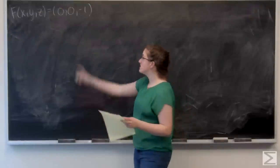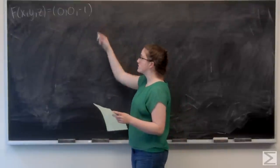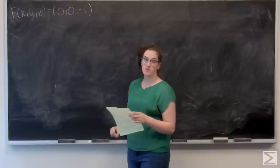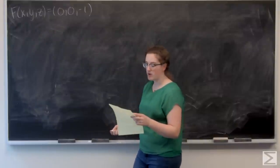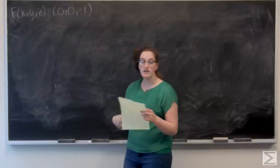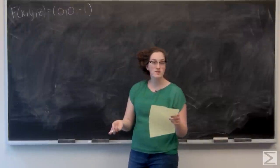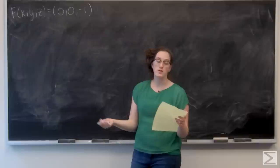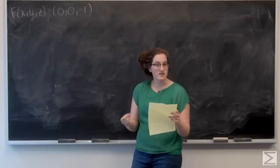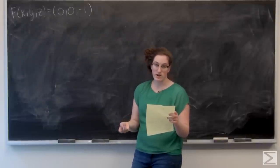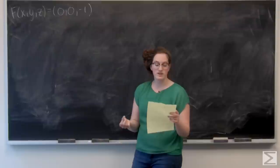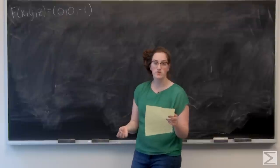For this problem, I'm given a constant vector field F of x, y, and z, which is (0, 0, -1). And I'm given a surface M, which is the bottom hemisphere of a sphere of radius 3, centered at the origin, with a disk on top closing the surface.